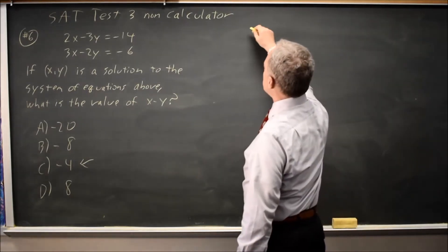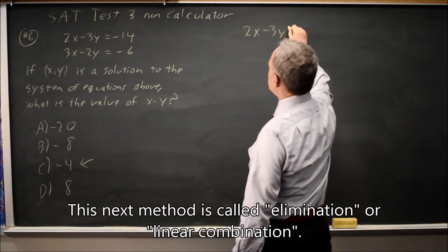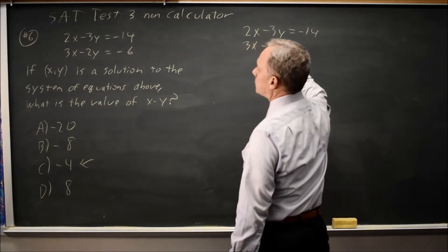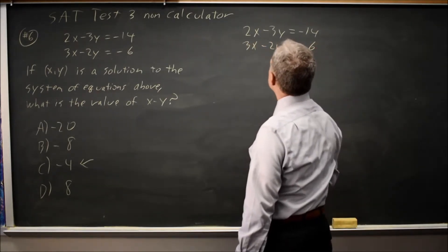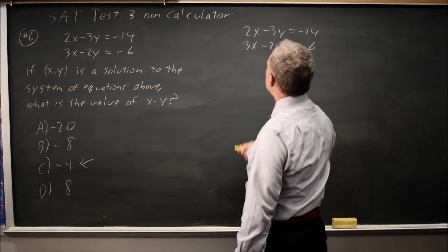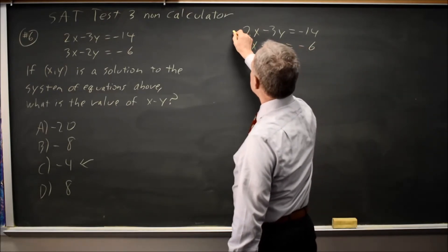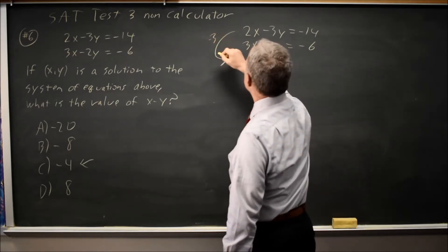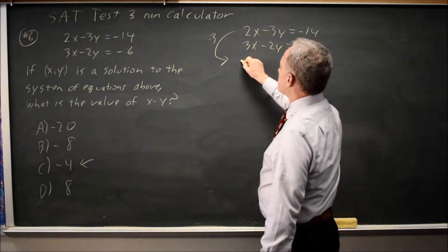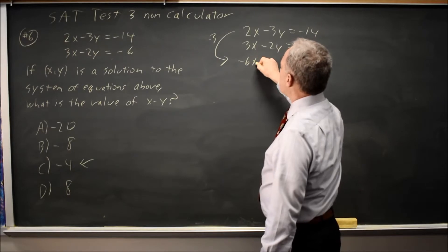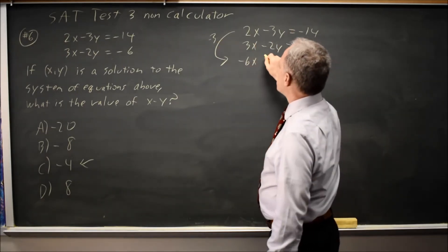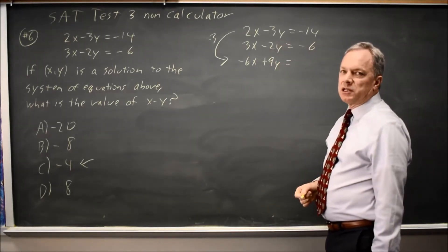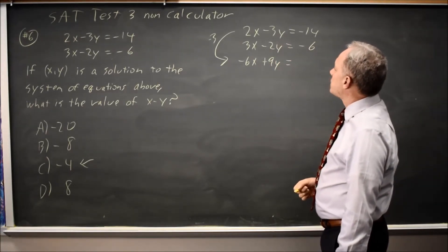So I have 2x minus 3y equals negative 14. 3x minus 2y equals negative 6. If I multiply the first equation through by negative 3, 2x times negative 3 is negative 6x. Negative 3y times negative 3 is plus 9y. Negative 14 times negative 3, negative times negative is positive, equals 42.